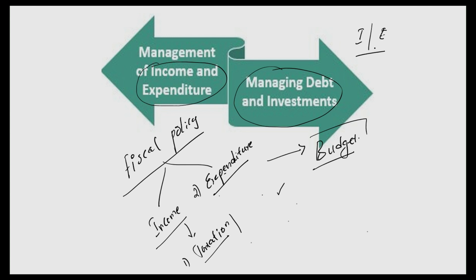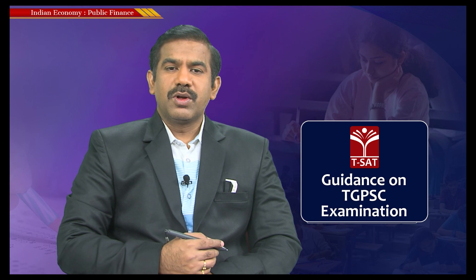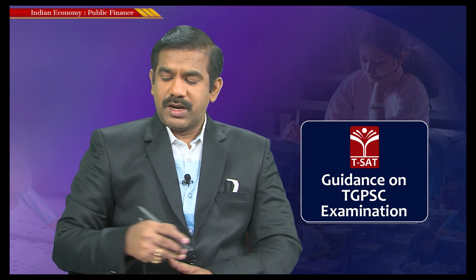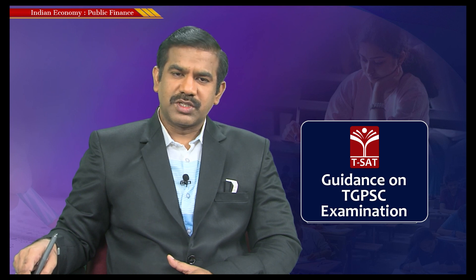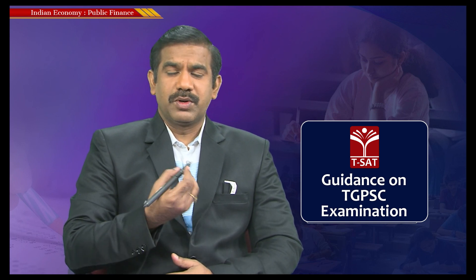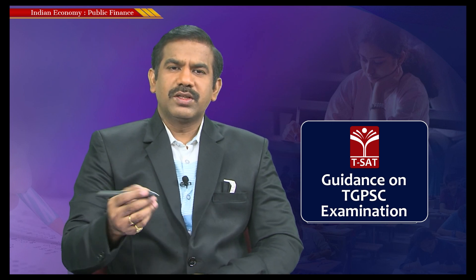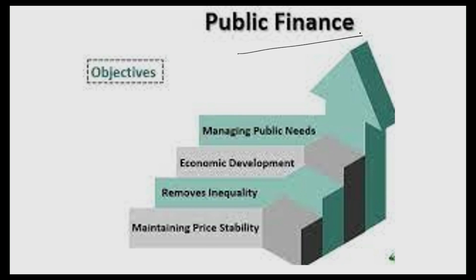Fiscal policy involves managing the income and expenditure of the government and managing debt and investments. It is not necessary for a government to always have income exactly matching its expenditures. Along with managing income and expenditure, the government also manages its debt, and that is what fiscal policy is all about.